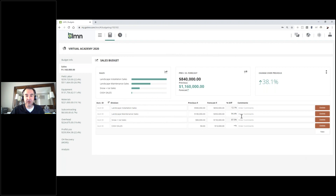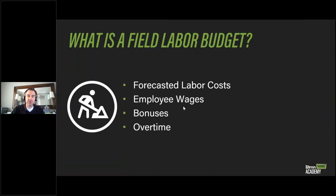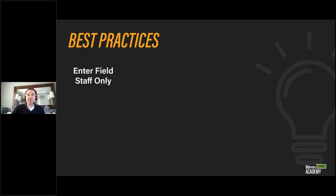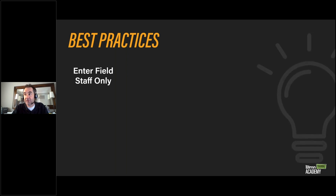Now we're set with our sales forecast and we want to start putting in our cost of goods: field labor, equipment, materials, and subcontracting. Let's look at field labor first. When looking at the field labor section, this covers all your forecasted labor costs — employee wages, bonuses, and overtime. These are all expenses you have to pay out for your labor force. One best practice to consider: you're entering field staff only, not employees who are mainly in the office or the owner who is strictly in the office.